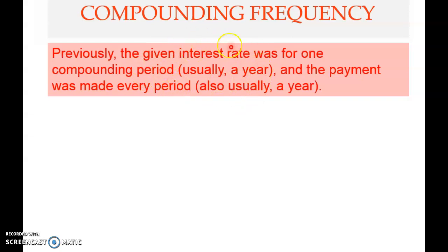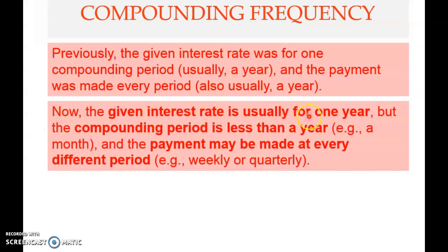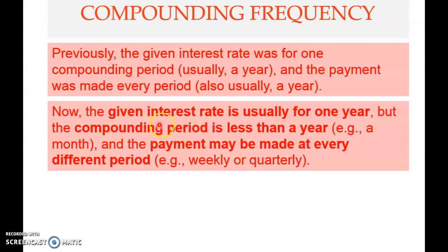Now there are three things: the interest rate — the stated interest rate — is usually for one year. The compounding period can be less than a year, for example a month. Previously the compounding period was a year, but now the interest rate is given for one year while the compounding period is less than a year. The payment may also be made at a different period, for example weekly.